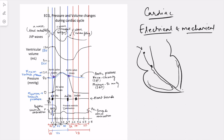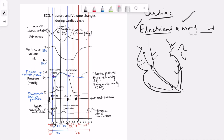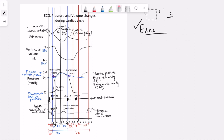Electrical activity starts at the SA node, spreads in the atria, and for that we get the P wave. After this electrical activity, there is contraction of the atria. Then as the electrical impulse spreads in the ventricle, we get ventricular contraction and then ventricular relaxation. In the meantime, when the ventricles are contracting, the atria also relax. The key point is not to confuse electrical activity with mechanical activity — mechanical contraction occurs due to the electrical activity.